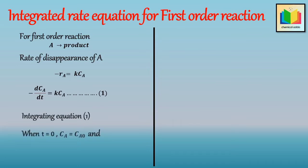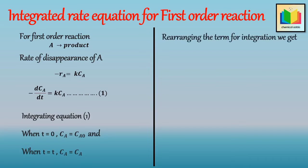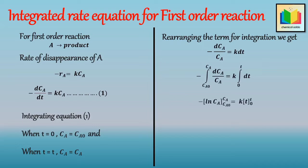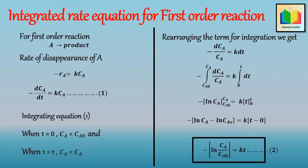Now let's integrate equation 1 within the limits: when T equals 0, C_A equals C_A0, and when T equals T, C_A equals C_A. For integration, we first rearrange the terms of equation 1 to get minus dC_A/C_A equals K·dT. After integration and applying the limits, we get: minus ln(C_A/C_A0) equals K·T.